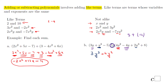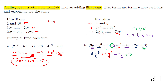So 3y plus negative 4y: 3 plus negative 4 equals negative 1, giving us minus y. The last group is the constants: negative 5 plus positive 8 equals positive 3. The final answer is: 3y³ + 4y² − y + 3.